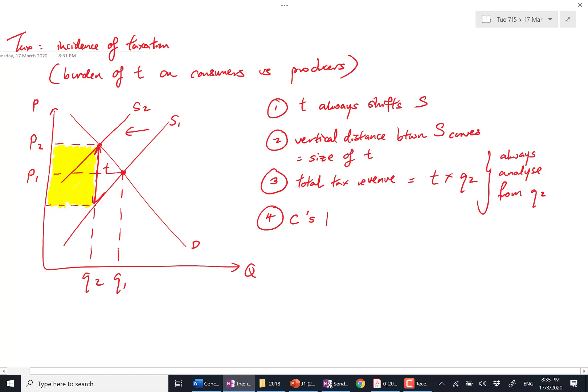Fourth point: consumer's burden, or consumer's incidence, is the change in price multiplied by Q2. So the consumer's share is this much. Why? Consumers only know that they have been taxed when they see that prices have increased.